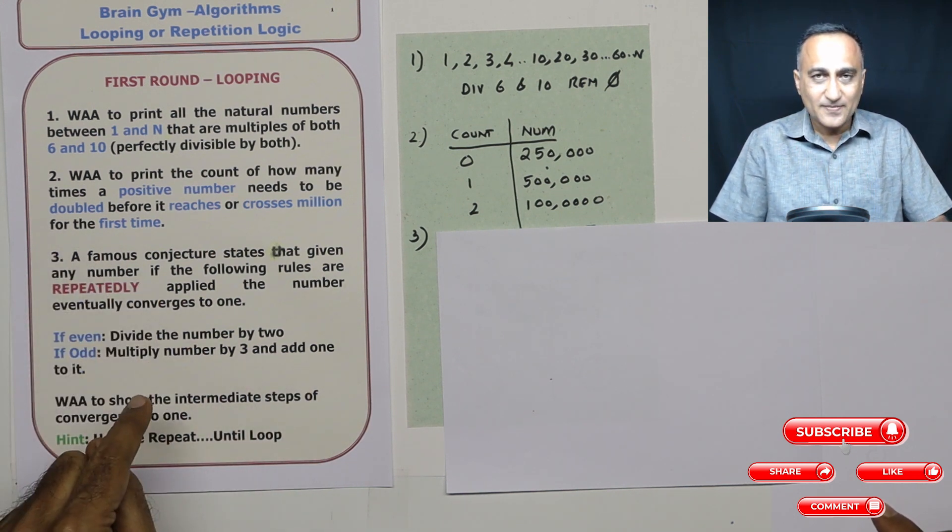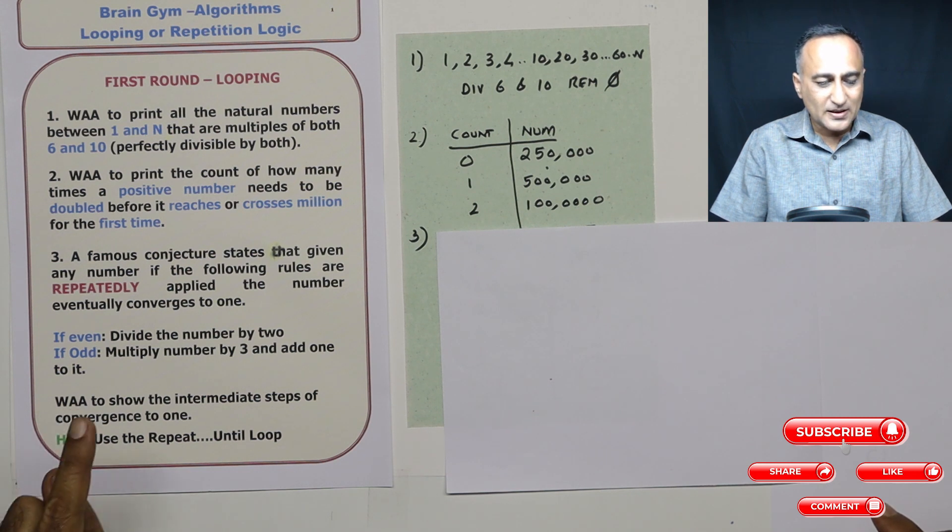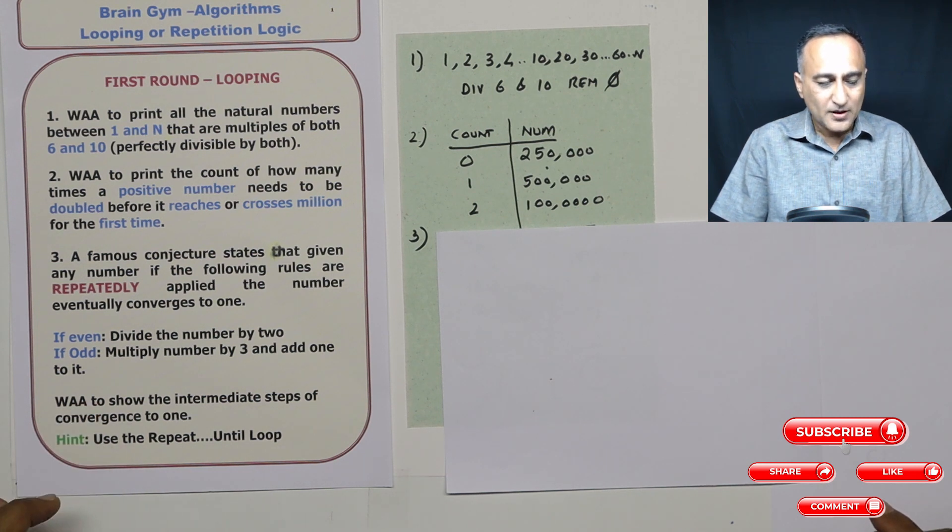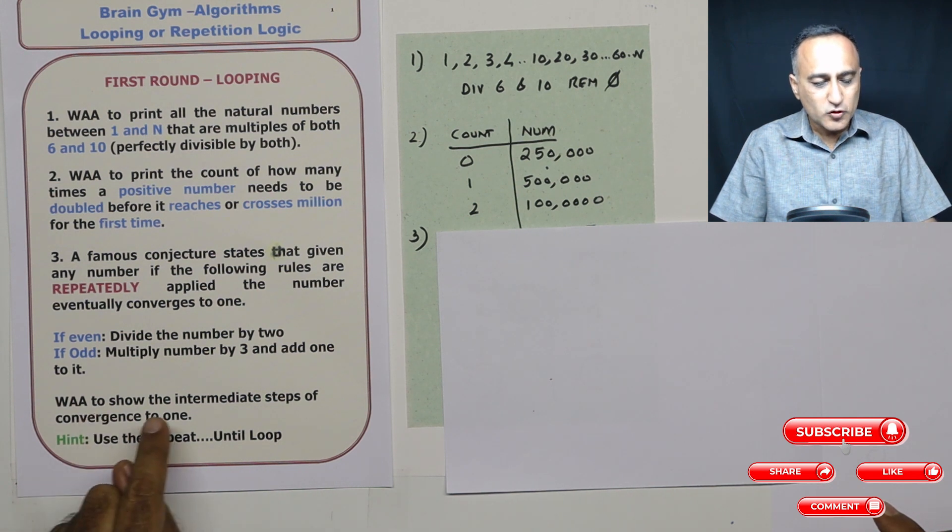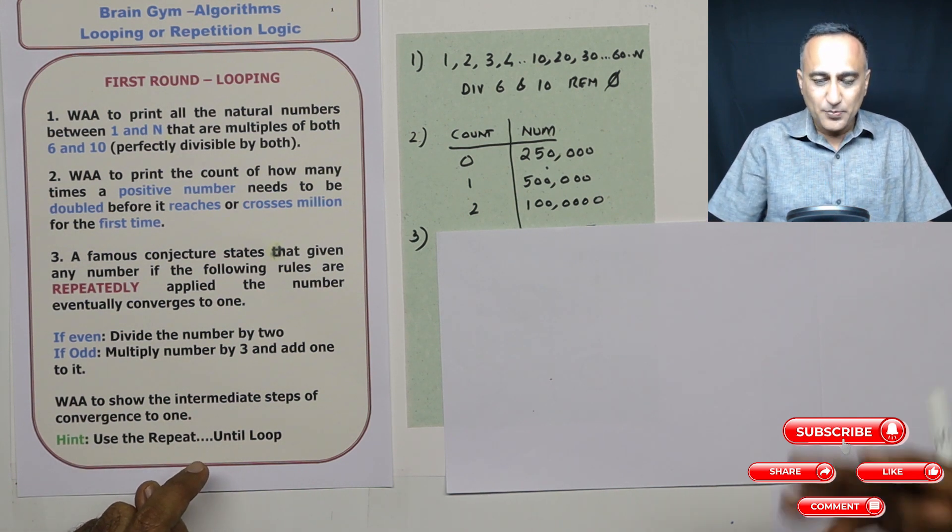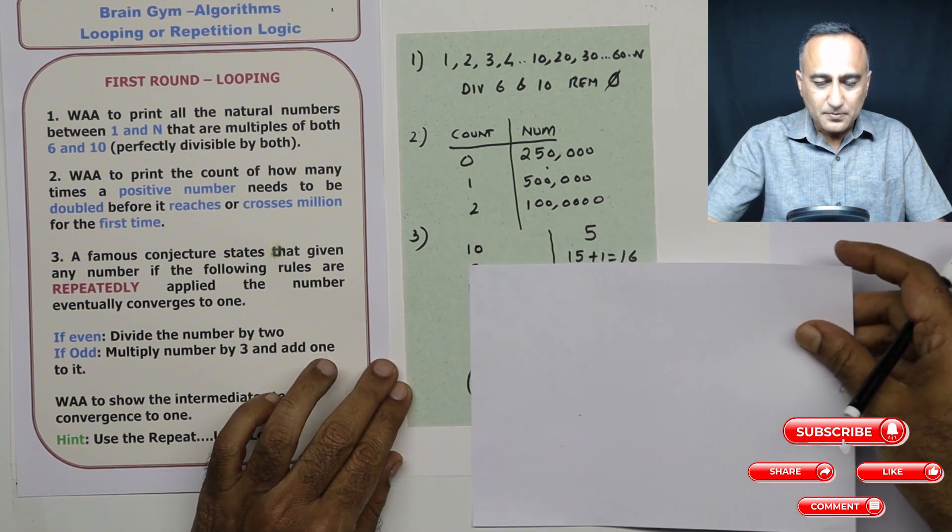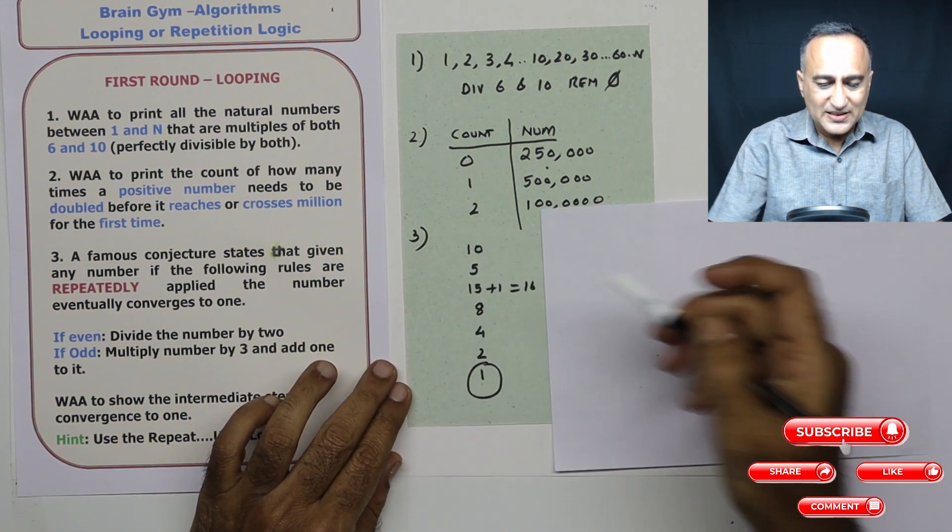Continue this process. And sooner or later, the number will finally reach one. The thing what this algorithm is asking you is it is asking you to show all the steps in the middle. Like suppose, let's say, I take a number input as 10.